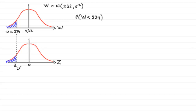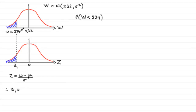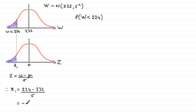To get z1, we use the standardization formula: z equals the observed value minus the mean mu, all divided by the standard deviation sigma — a result we should always know. In this case, z1 equals 224 minus 232, divided by the standard deviation of 5 (the square root of the variance of 25).